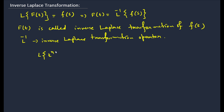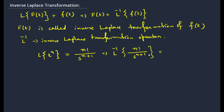So I think you remember this standard result: the Laplace transformation of t^n is n factorial divided by s^(n+1). Then, shifting L to the right-hand side, L inverse of n!/s^(n+1) will be t^n. This implies L inverse of 1/s^(n+1) is nothing but t^n / n factorial. So like this we can find the other properties also.